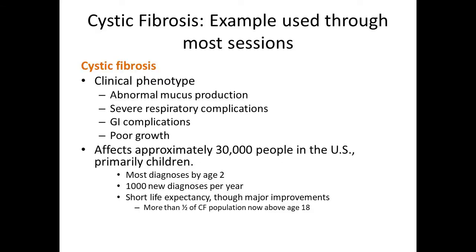Throughout these videos, all of the examples I will provide will be based on a single genetic disease: cystic fibrosis. The clinical phenotype of cystic fibrosis is abnormal mucus production, severe respiratory complications, GI complications, and poor growth. This disease affects approximately 30,000 people in the United States, primarily children. There are approximately 1,000 new diagnoses of cystic fibrosis each year. Unfortunately, these patients have a short life expectancy, although new treatments have provided an increase in life expectancy, and now more than half of the patients with cystic fibrosis live past the age of 18.